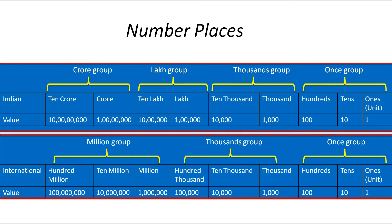In the Indian system, the number places are: Ones place, Tens place, Hundreds place, Thousands place, Ten Thousands place, Lakh, Ten Lakh, Crore, and Ten Crore. The Ones group includes Ones, Tens, and Hundreds. The Thousands group includes Thousands and Ten Thousands. The Lakh group includes Lakh and Ten Lakh. The Crore group includes Crore and Ten Crore.